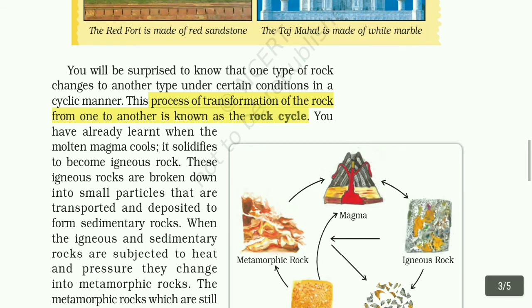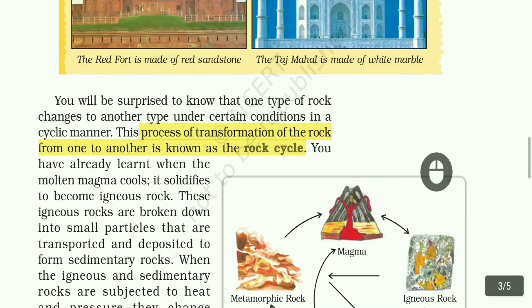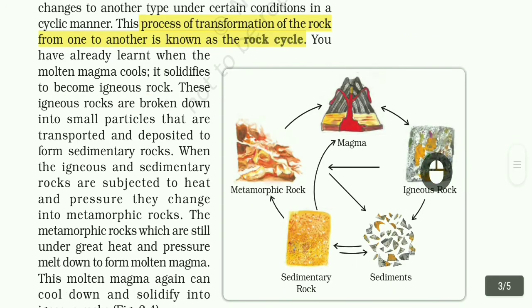We will be surprised to know that one type of rock changes to another type under certain conditions in a cyclic manner. This process of transformation of the rock from one to another is known as the rock cycle. See this picture - the first one is igneous rock.